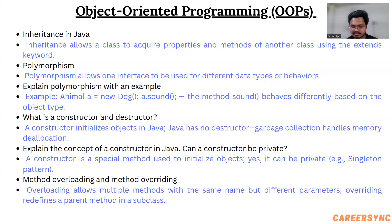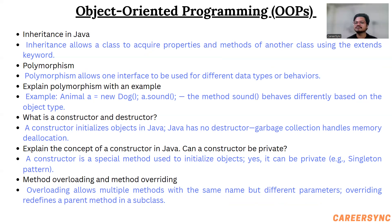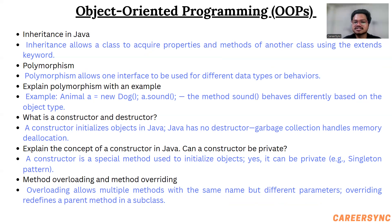There are two types of polymorphism: runtime polymorphism and compile-time polymorphism, and you should go deeper into each. What is a constructor and destructor? A constructor initializes objects in Java. Java has no destructor because it uses garbage collection, which handles memory deallocation. Can a constructor be private? A constructor is a special method used to initialize an object — yes, it can be private. What is method overloading and method overriding? Method overloading allows multiple methods with the same name but different parameters, while method overriding redefines a parent method in a subclass.